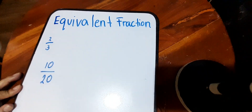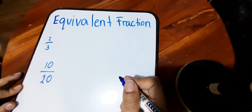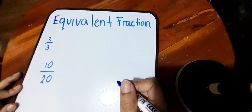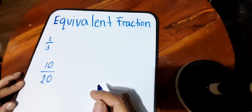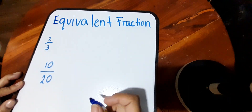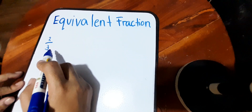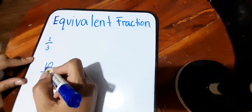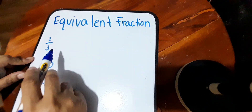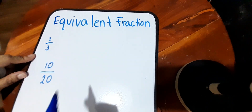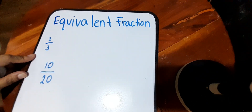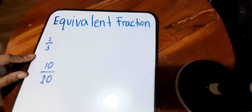There are two ways on how to get the equivalent fraction of a certain fraction. The first way is to multiply. So like for example, this number two-thirds — when we want to know the equivalent fraction, you just have to simply multiply a number.